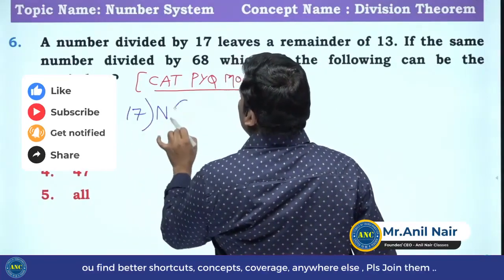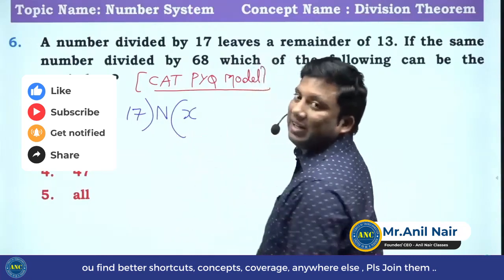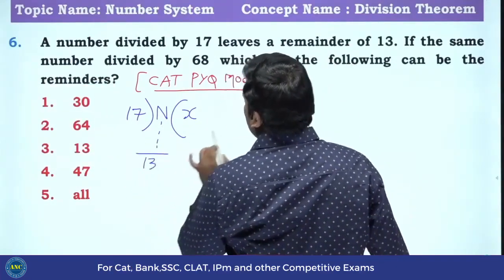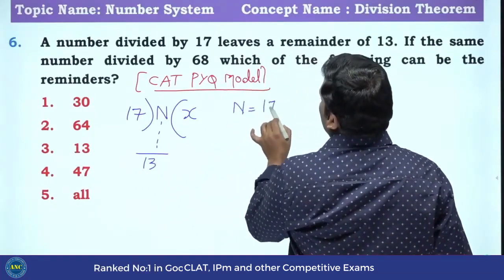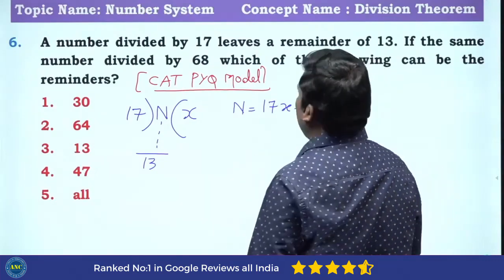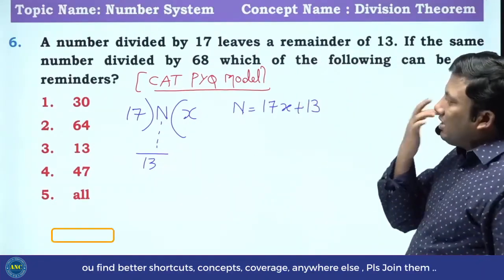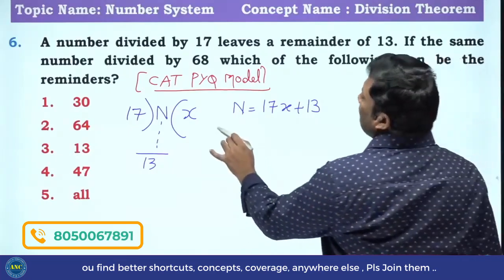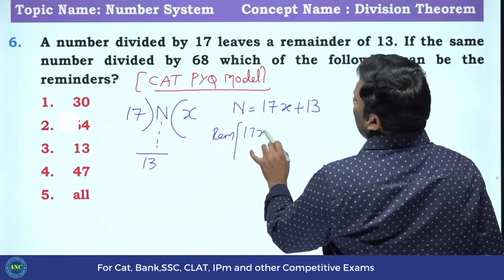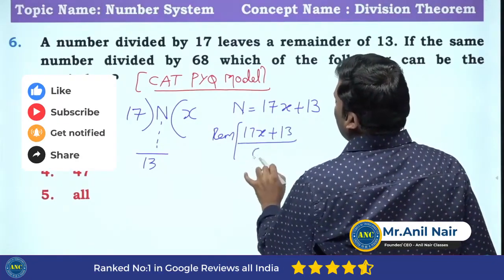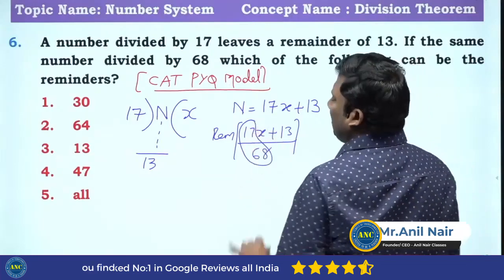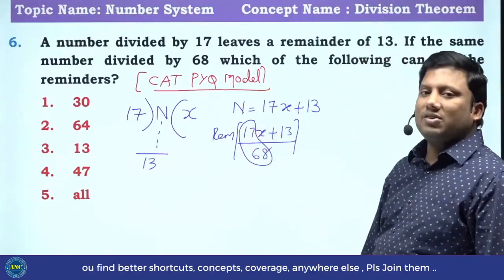There is a number divided by 17; the quotient is X and it leaves a remainder of 13. Dividend equals divisor into quotient plus remainder. Now, if the same number is divided by 68 — this is an easy question, and the previous question was perfectly divisible by the denominator.